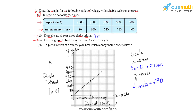The next part says we'll have to use the graph to find the interest on rupees 2500 for a year. Since five units corresponds to 1000 rupees, two and a half units will correspond to 500 rupees. So from 2000 rupees we move two and a half units, which lands somewhere here. Drawing a line to get the corresponding point on the y-axis, we find it is exactly in the middle of 160 and 240, which is 200. So the interest on rupees 2500 for a year is rupees 200.